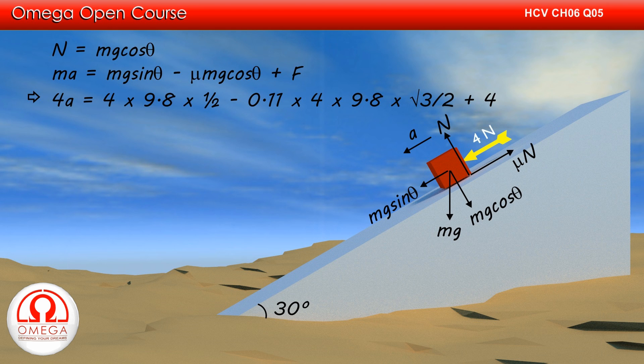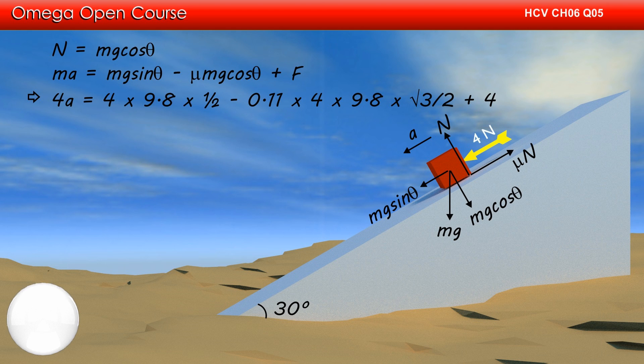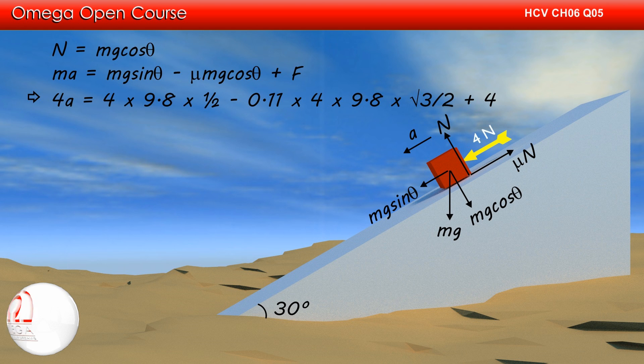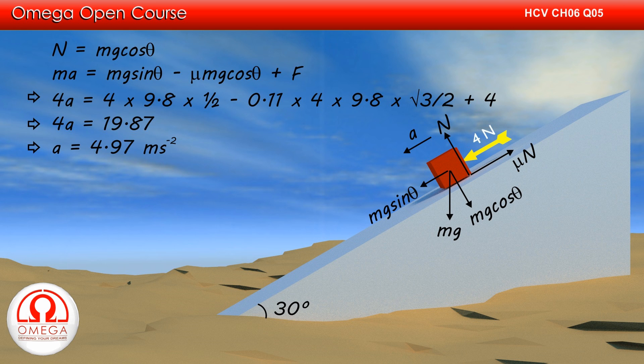Putting the values, we get 4A is equal to 4 into 9.8 into 1/2 minus 0.11 into 4 into 9.8 into root 3 by 2 plus 4. On calculation, we get 4A is equal to 19.87, or A is equal to 4.97 meters per second squared.